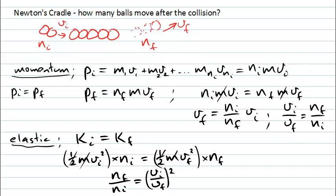Now instead of writing vi over vf, we can use this relationship that we had from our momentum conservation. So this means it must be nf over ni squared. And one way to look at this now is that nf over ni must equal nf over ni squared.